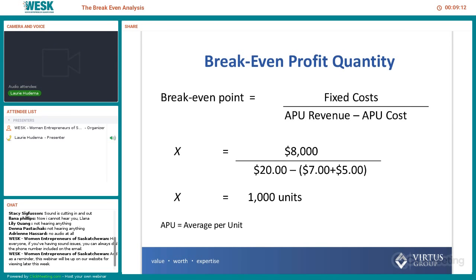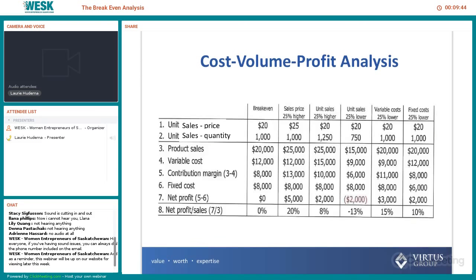So let's do the calculation using those figures. We have fixed costs over our average unit contribution margin. So we take $8,000 divided by $20 less the direct costs — $7 plus $5 — so that's $8,000 divided by $8, which is 1,000 units. So that's our break-even point. We need to do 1,000 oil changes before we break-even in our scenario.